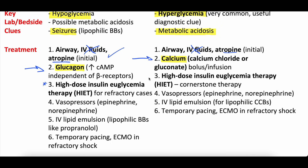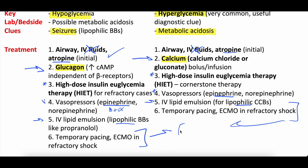Both can benefit from high-dose insulin euglycemic therapy, which was covered in the original episodes. Both benefit from vasopressors, with a particular focus on epinephrine because it has both beta and alpha effects, whereas norepinephrine is primarily alpha. Both can benefit from IV lipid emulsion, but it should be for lipophilic beta blockers or calcium channel blockers — though if someone is sick enough, you might try it generally. For refractory shock not responding to other interventions, patients might need ECMO. Management has a lot of overlap, with the key differences being glucagon for beta blockers and calcium for calcium channel blockers. For QRS widening from sodium channel blockade, you give bicarbonate therapy.